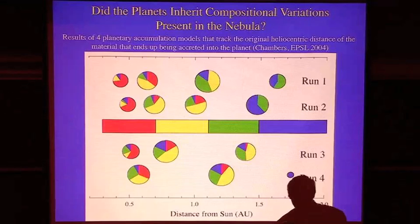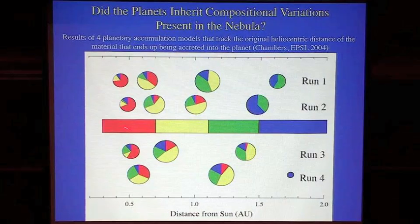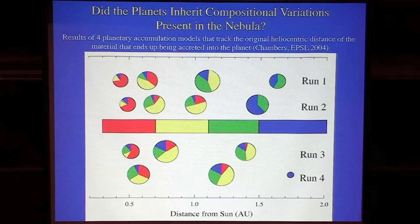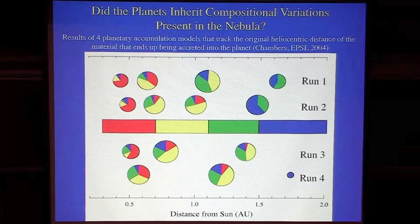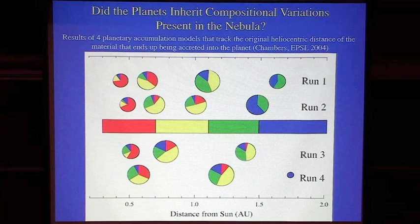What John did here was tag the objects with a color code depending on where they started in the solar system — red for the inner solar system, blue for the outer. As these planets migrated, they mixed icy stuff from the outside with the volatile-depleted stuff from the inner solar system. You can look at a planet that ends up in the green belt but contains components from all regions of the solar nebula. On the other hand, some planets only contain components from the outer parts of the terrestrial planet-forming region. So if there is chemical heterogeneity from a heliocentric temperature gradient, it can be preserved through this planet-building process.